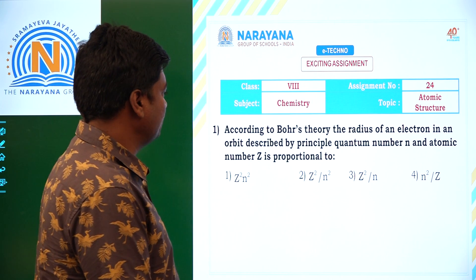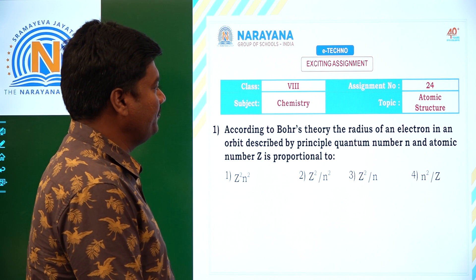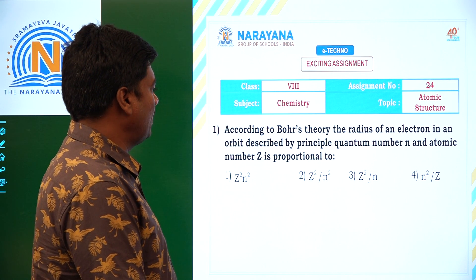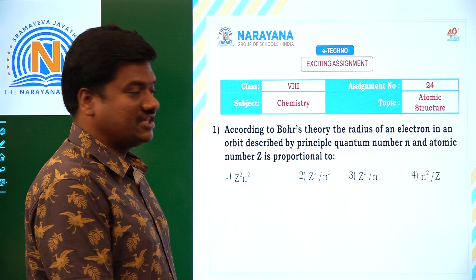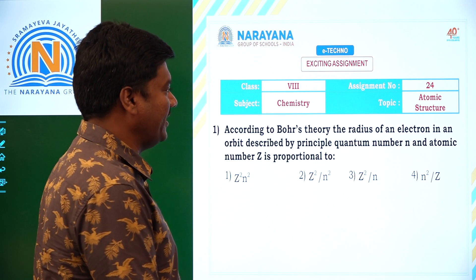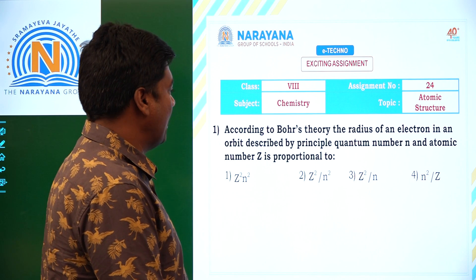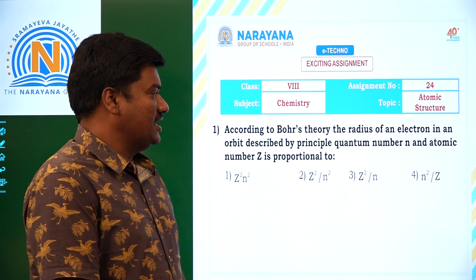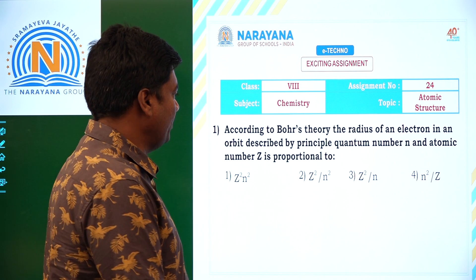The first question is: According to Bohr theory, the radius of an electron in an orbit described by principal quantum number n and atomic number z is proportional to?